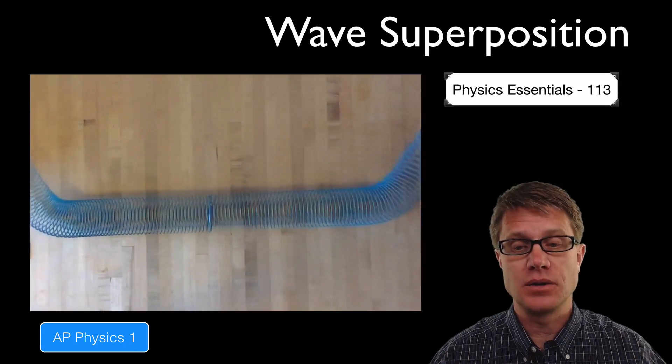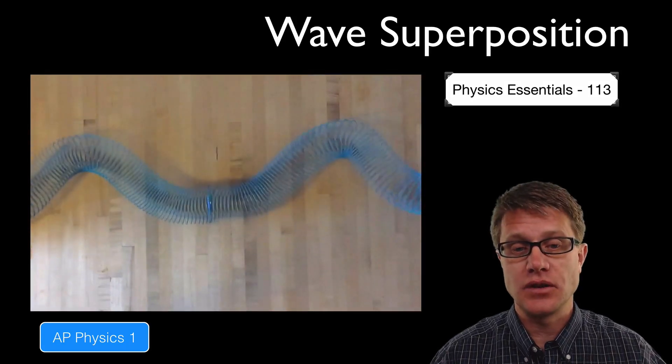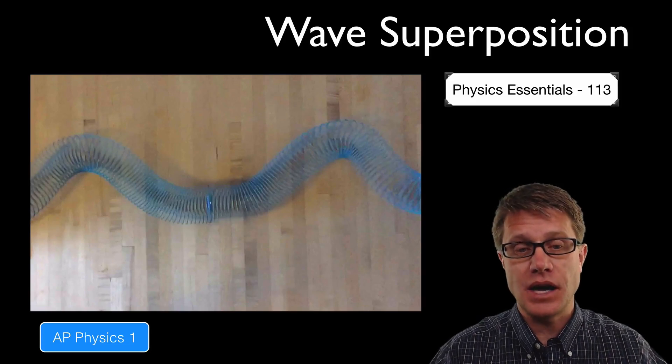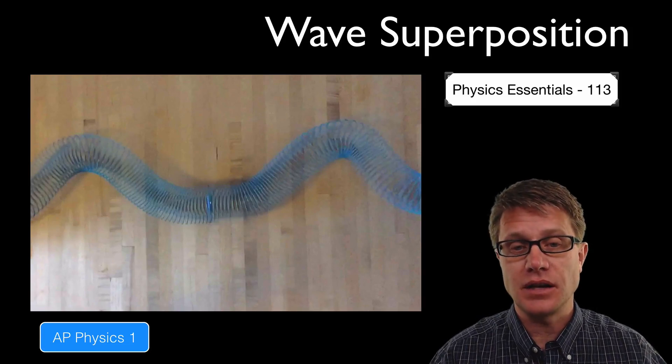So let's watch this wave right here. We are sending two waves, these are transverse waves, towards each other. And so what is going to happen when they meet? What is going to happen at that point where the slinkies are connected?